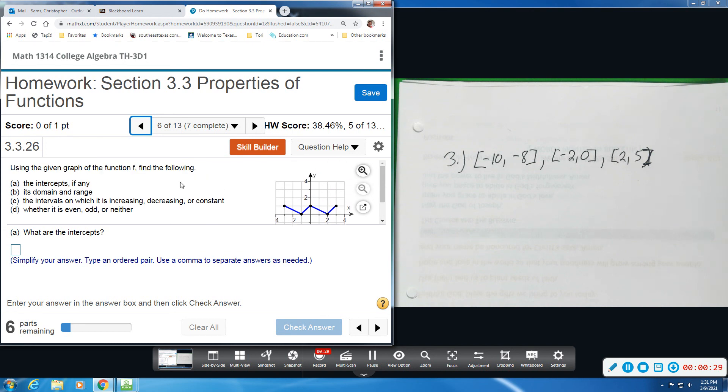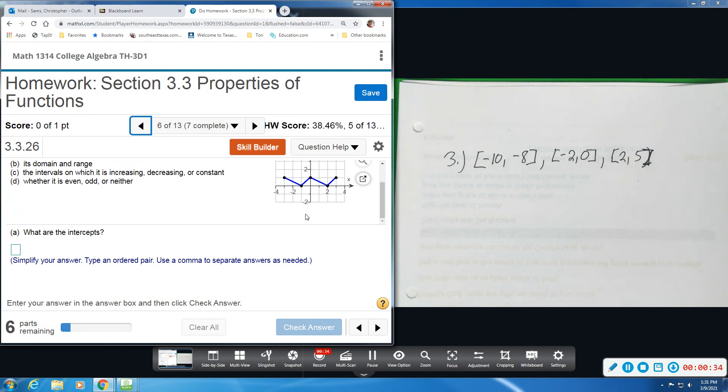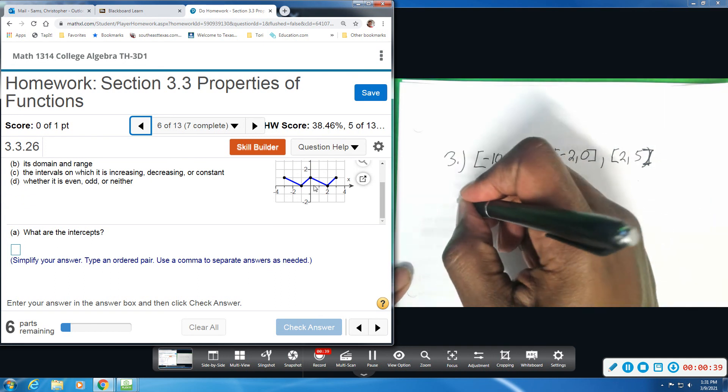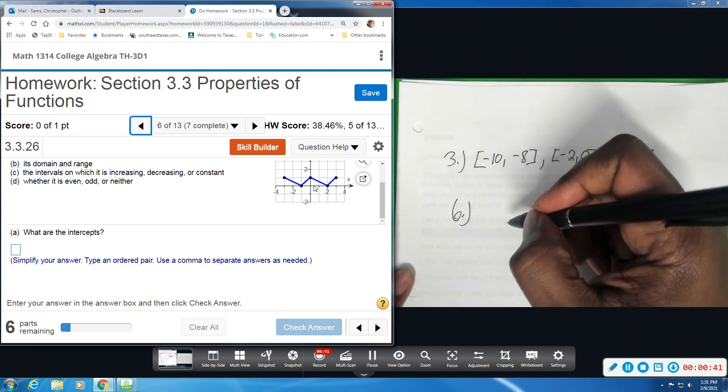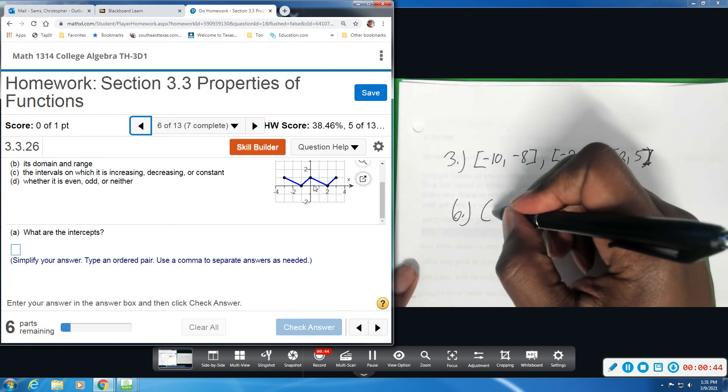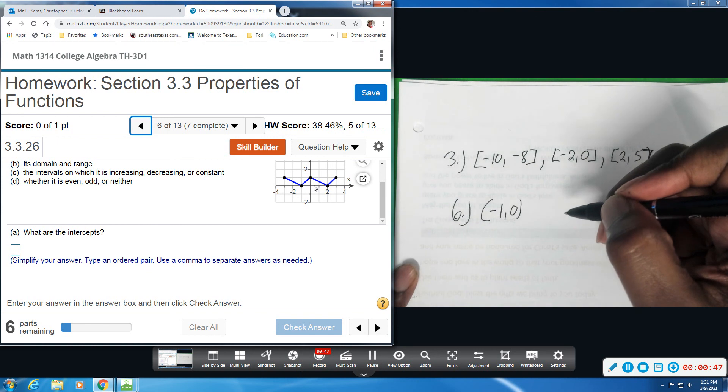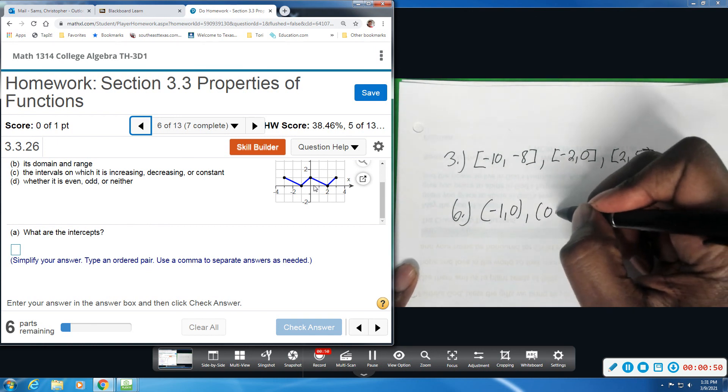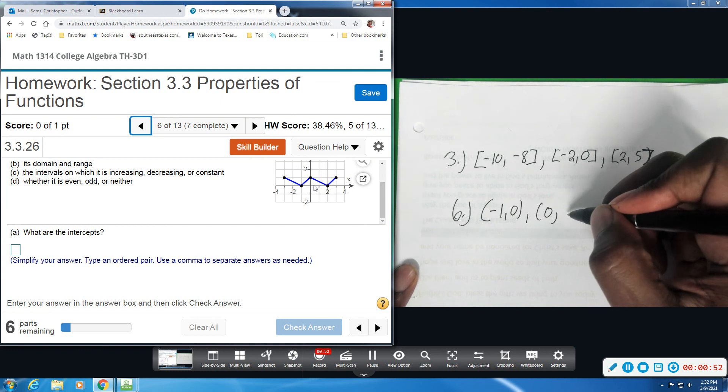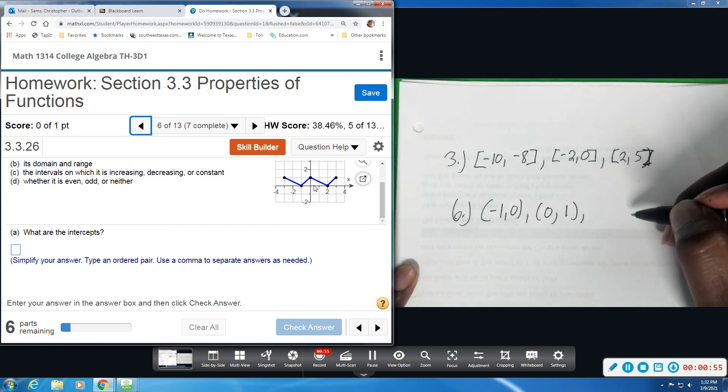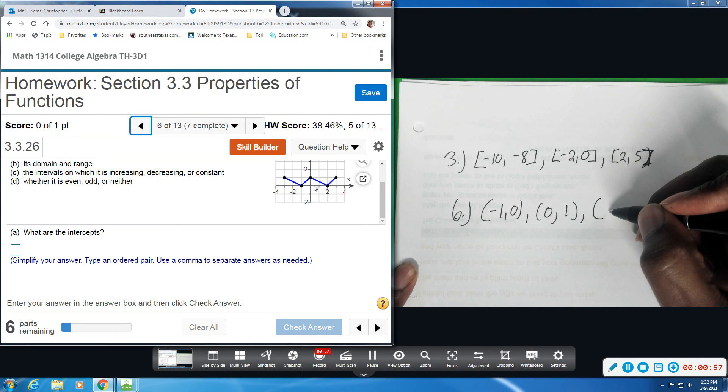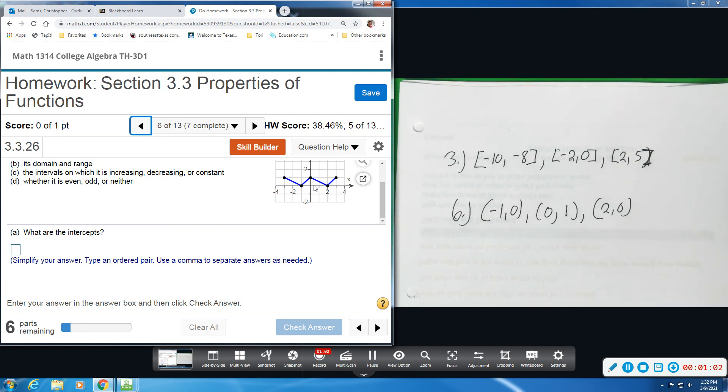Okay, so intercepts, we can see where this crosses or touches the x-axis or the y-axis. So on this number six, we have intercepts, looks like at negative one, zero is an x-intercept, a y-intercept at zero, one, and then another x-intercept at two, zero. Okay, so we have those intercepts.